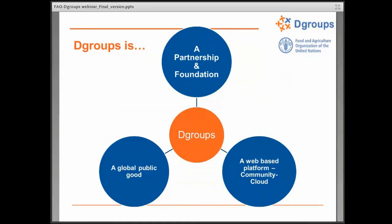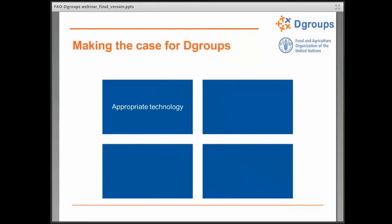So, a partnership, a web-based platform, and the third element is that we see dGroups as a global public good. We really see the partnership making the platform available to actors across the development sector, hosting a large family of discussion groups related to international development. The focus is not about building fancy technology. We're really trying to safeguard that it maintains what works and what is sustainable over time – not just in terms of financial sustainability, but especially in terms of access and use.